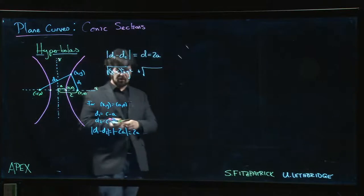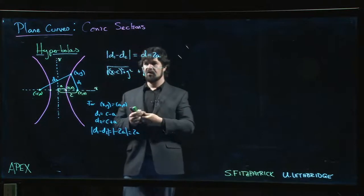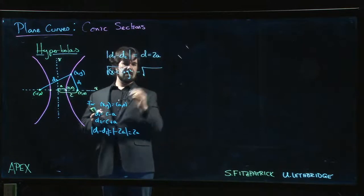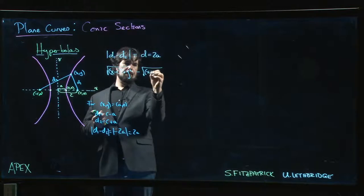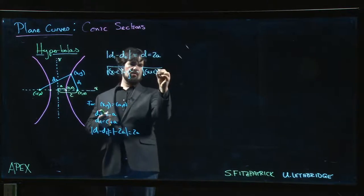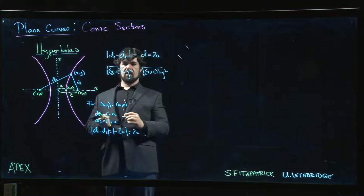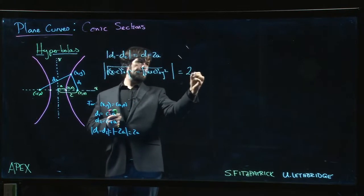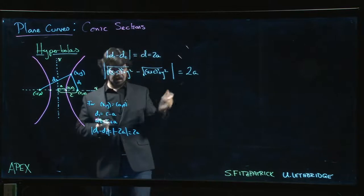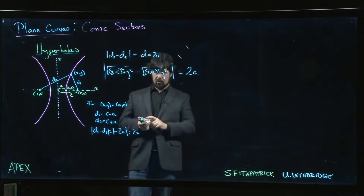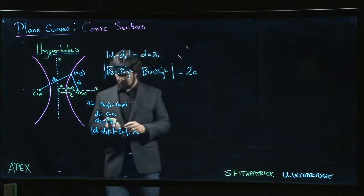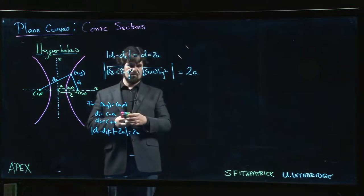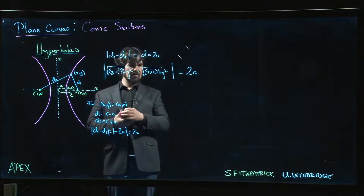So the distance there is going to be x plus c, just like it was for the ellipse. Except here's the key difference: a minus sign goes in there. sqrt[(x + c)² + y²], and we take the absolute value of that because this difference could be negative. We want that to be equal to 2a.